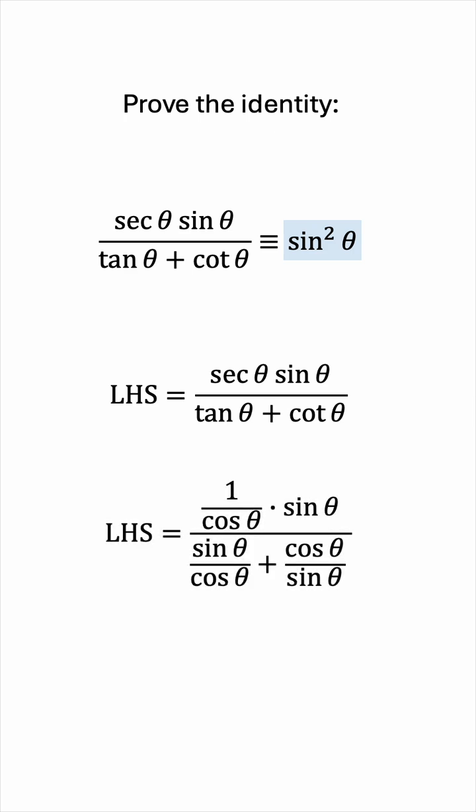Secant is 1 over cosine, tan is sine over cosine, and cotan is cosine over sine.